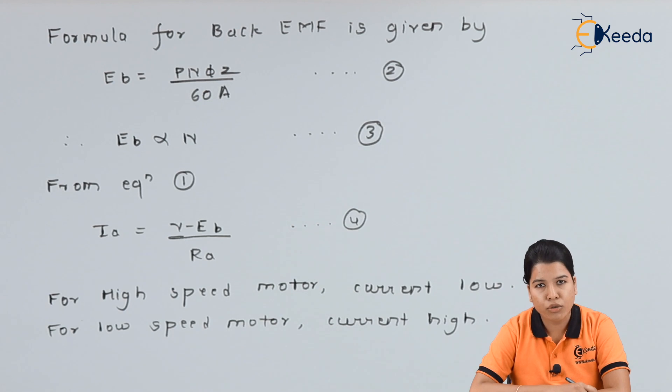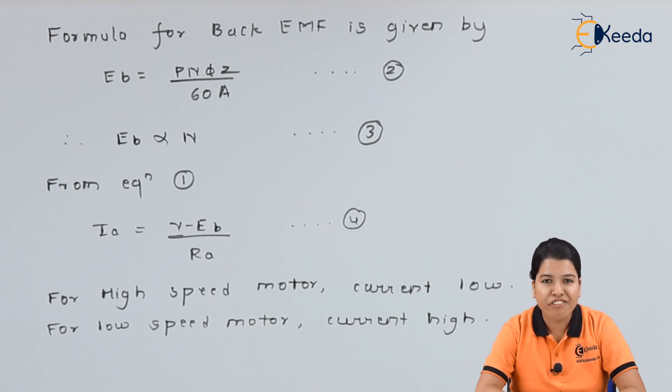Hence we can conclude that back EMF is very important in operation of DC machine. Due to the presence of back EMF, the electrical energy gets converted into mechanical energy. Also we have seen that the back EMF generates the amount of current that is required for working of the DC motor.